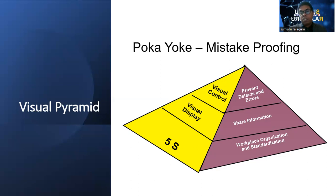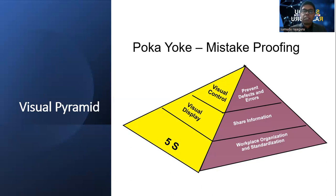Other than these three main elements, currently we are talking about another concept also. It is called Poka-yoke — that is a Japanese word. The meaning of Poka-yoke is mistake-proofing. Shall we take some examples? I think everyone knows about the SIM card.